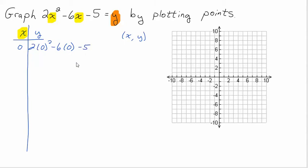Order of operations — I'm going to do the squared first. Zero squared is zero, times two is zero. Take away zero, take away five. That's going to give me negative five. So if I input zero, my y value, my output is negative five. I'm going to come down here and graph that point: zero, negative five.